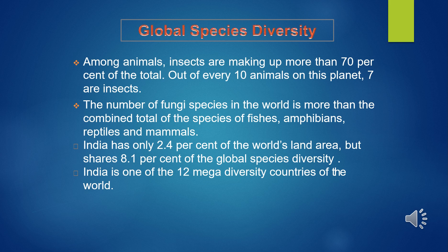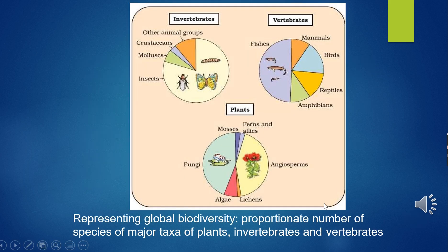Biodiversity is depicted in pie charts showing species numbers of major taxa. India is one of the 12 mega diversity countries of the world. These pie charts are very important for exams — questions can be framed asking which section represents fishes, mammals, birds, mosses, ferns, or crustaceans. The pie charts cover invertebrates, vertebrates, and plants.